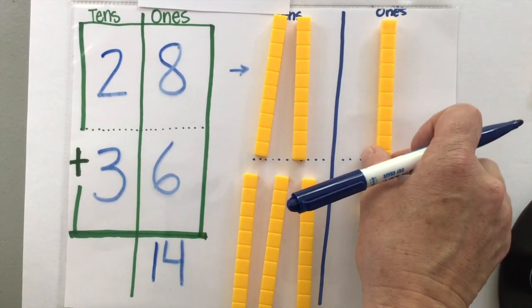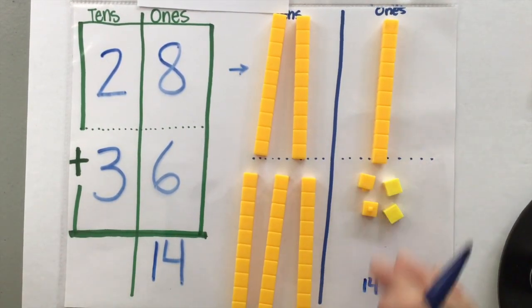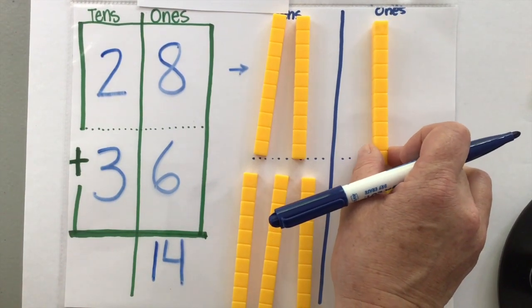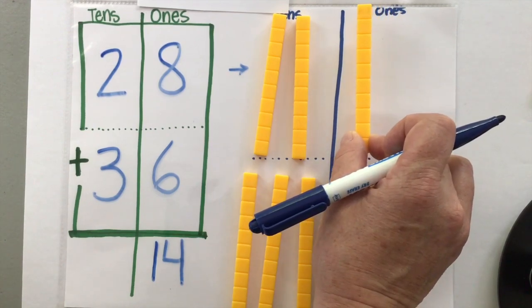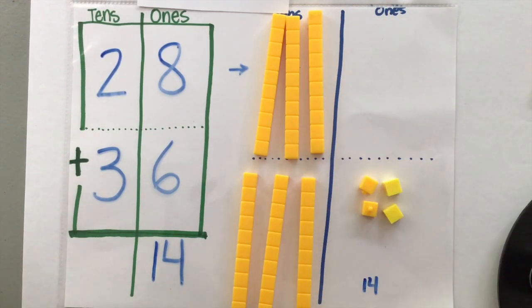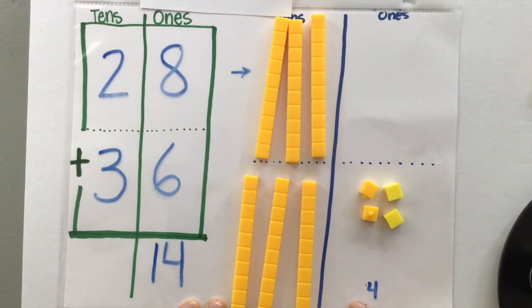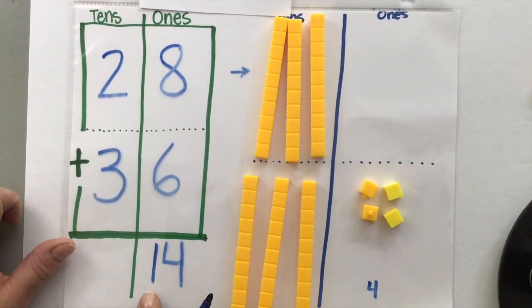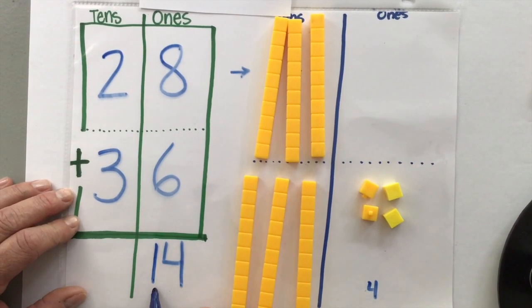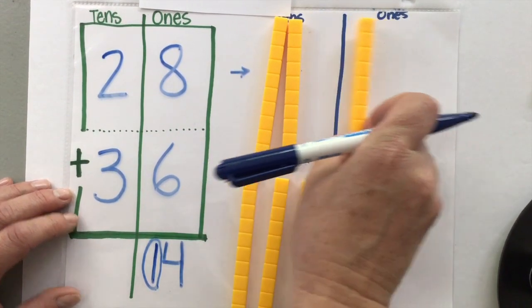But I can't leave this one set of 10 here in the ones column because I still have 14 in the ones column, one set of 10 and four. What we're going to do is we're going to carry in a little basket with a little imaginary basket, we're going to carry this set of ones over to the tens column. So now this one is gone. This set of 10 is gone because I put it over here.